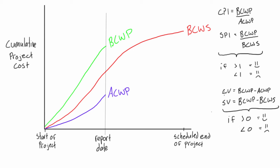For the variances, the reference point is zero instead of one. If the cost variance is greater than zero that means you are under budget, and if the schedule variance is greater than zero you are ahead of schedule. Conversely, a negative cost variance means you are over budget, and a negative schedule variance means you are behind schedule. We know all of this from previous videos on calculating CPI, SPI, and so on.